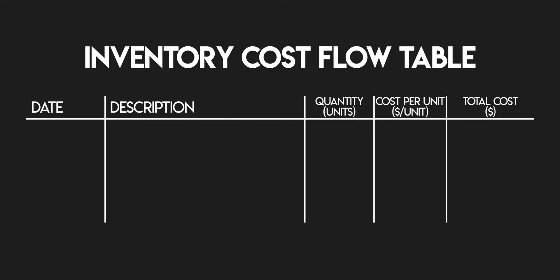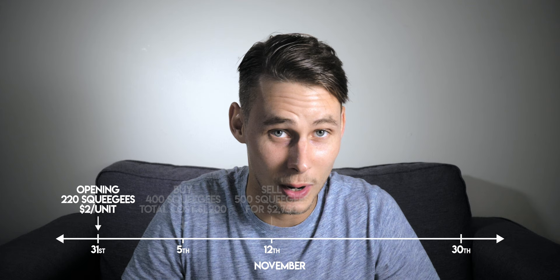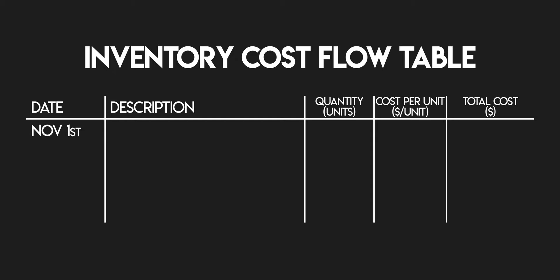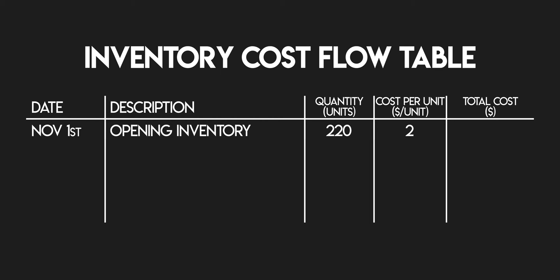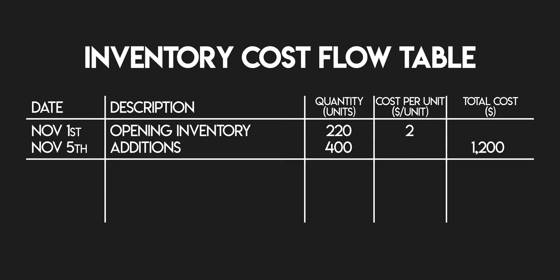Step two: enter what you know. Here's where we use the information given to us to fill out as much of this table as possible. You began November with 220 squidgies which cost you $2 per unit. So on November 1st, you had an opening inventory made up of 220 units which cost you $2 per unit. A few days later, you bought another 400 squidgies which cost you $1,200 in total — on November 5th, additions of 400 units for $1,200 total. In an inventory cost flow table, you want to leave an empty row beneath every addition or sale. This is where your subtotals are going to go — your goods available for sale, or your closing inventory after the final transaction.